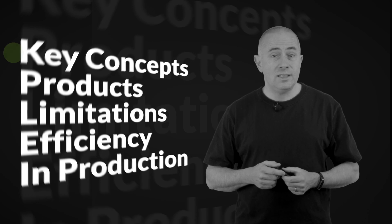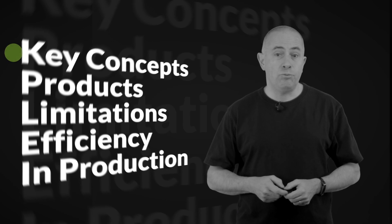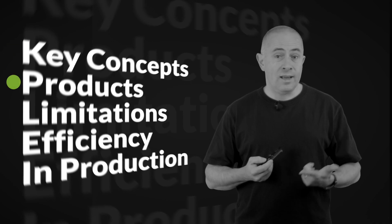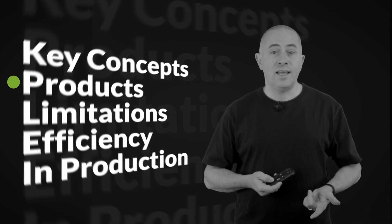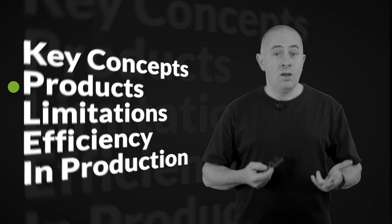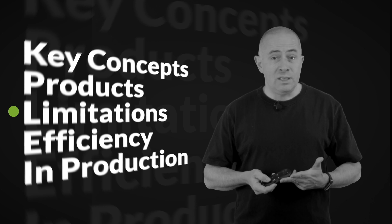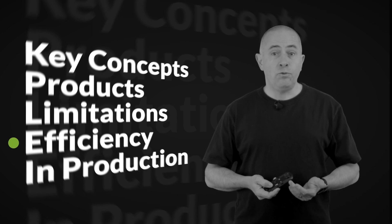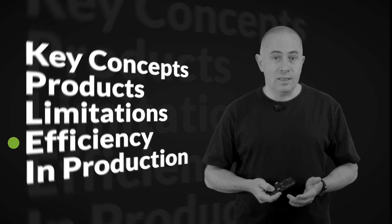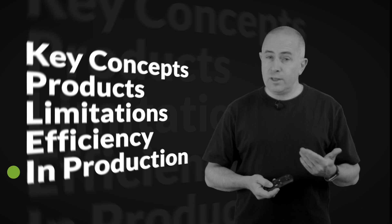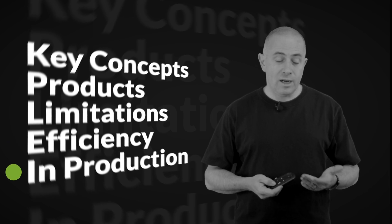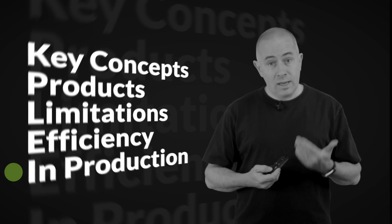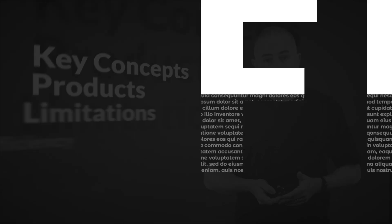We'll try to answer the following questions today: What are the key concepts behind FIB compression technology? What kind of products can enable it? What could be the limitations? How efficient is it in the base case for a public internet table? And finally, we will verify the performance of the algorithm in real production networks.